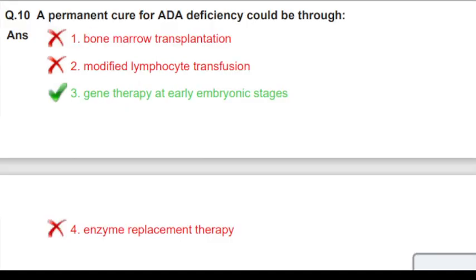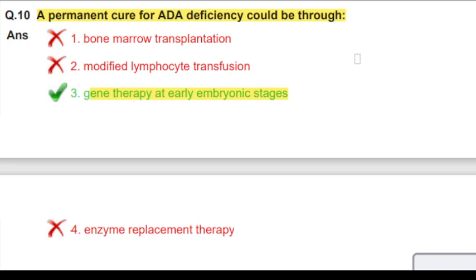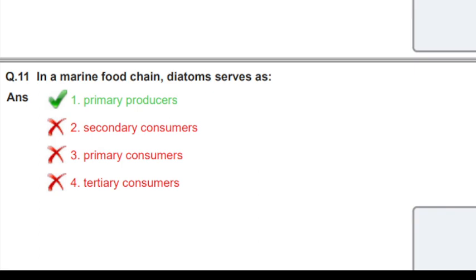A famous NCERT question: a permanent cure for ADA deficiency could be through what? Gene therapy at early embryonic stage. If ADA deficiency occurs, gene therapy at the early embryonic stage can cure this genetic disorder. This is explained in detail in the classes.